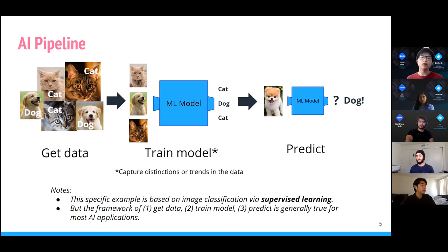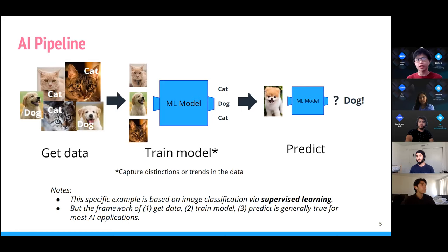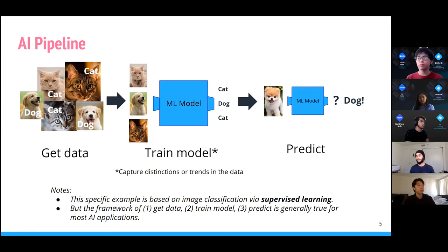The framework of gather data, train model, and then predict is generally true for most AI applications. This pipeline should be useful when looking at the other AI tools we'll cover later in the presentation.